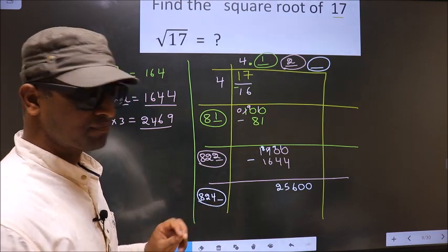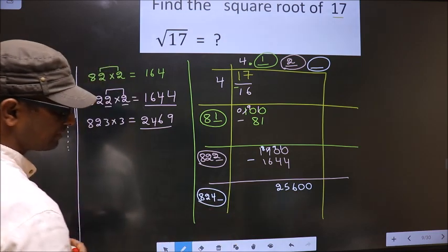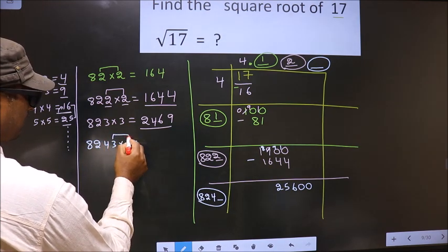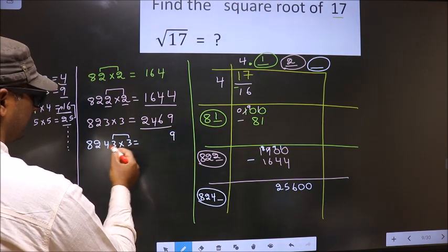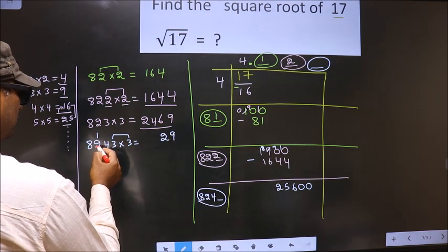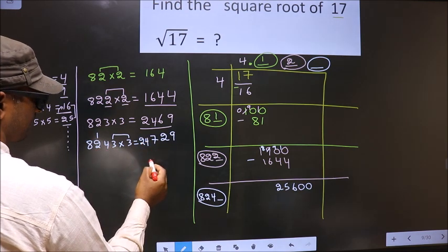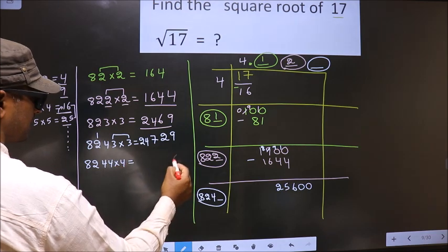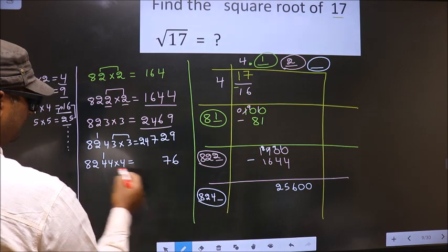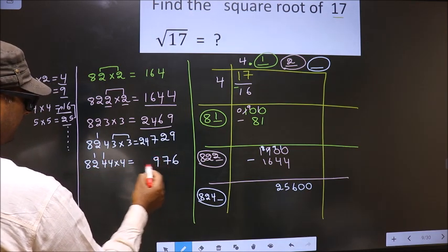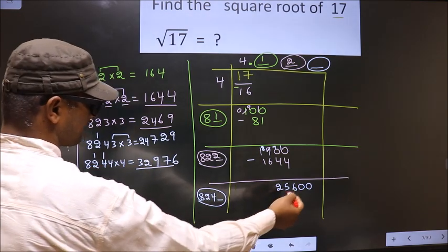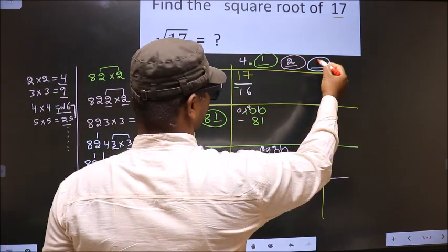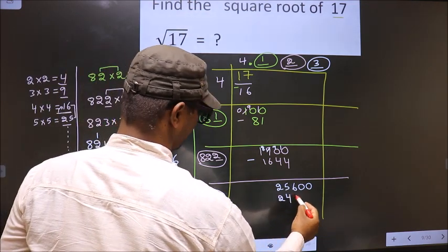So let us find the number. Here it is 8,000 and there 25,000, so I will take 3. So 8, 2, 4, 3 — multiply by 3. 3 into 3 is 9, 3 into 4 is 12 — write 2 carry 1, 3 into 2 is 6 plus 1 is 7, 3 into 8 is 24 — we got 24,729. What if we take 4? 4 into 4 is 16, 4 into 4 is 16 plus 1 is 17, 4 into 8 is 32 plus 1 is 33 — this number exceeds this. So we take 3. So 3 here, 3 here, and 24,729 here.